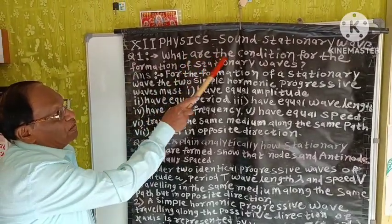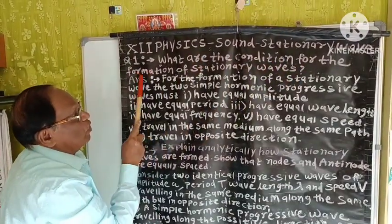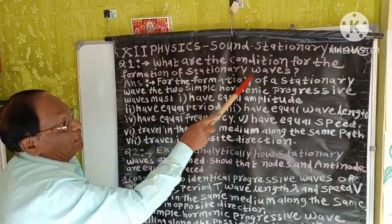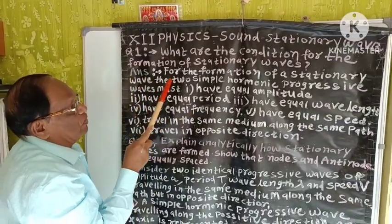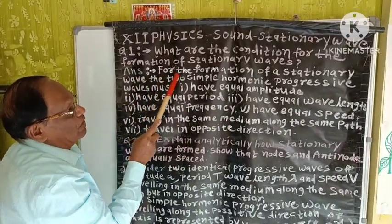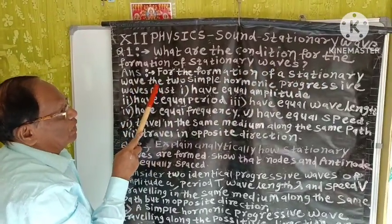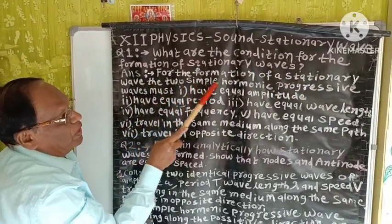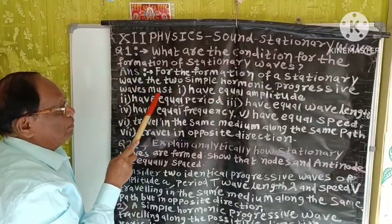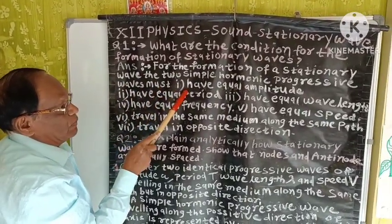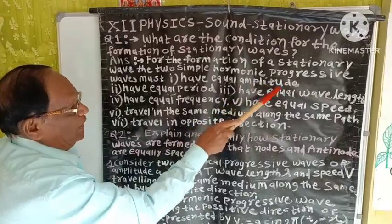Question 1: What are the conditions for the formation of stationary waves? Answer: For the formation of a stationary wave, the two simple harmonic progressive waves must — first point — have equal amplitude.